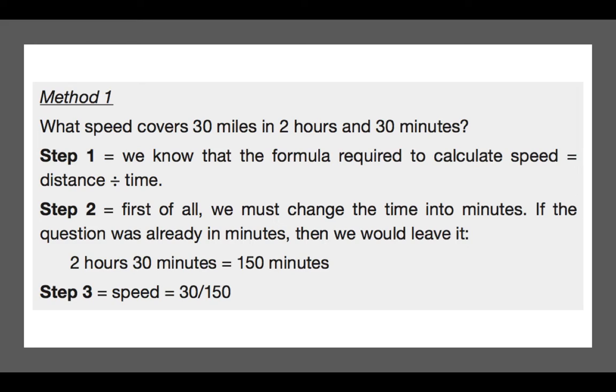So the question is, what speed covers 30 miles in 2 hours and 30 minutes? Now some of you should be able to do this quickly in your head. And this is a very basic question, but one I want to work through for you. Step one, we know that the formula required to calculate speed is distance divided by time. Step two, first of all, we have to change the time into minutes. So you've got there 2 hours and 30 minutes. So to make it easier for you, simply calculate how many minutes are in 2 hours and 30 minutes. And the answer there is 150 minutes. Now we all know that 60 minutes are in an hour, so you can work that out relatively quickly.